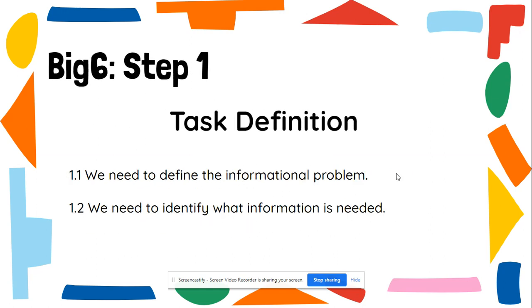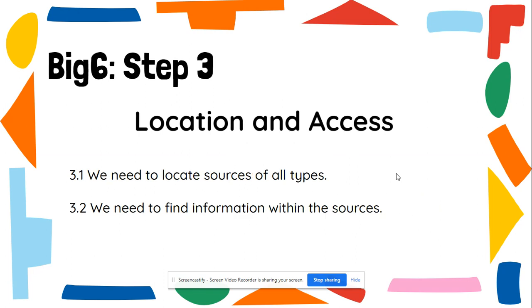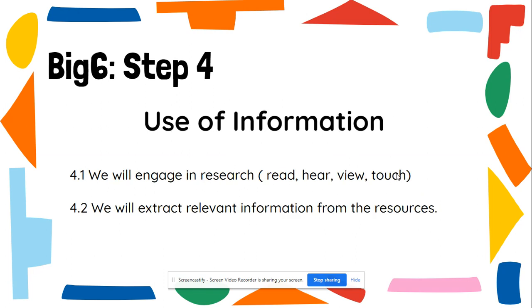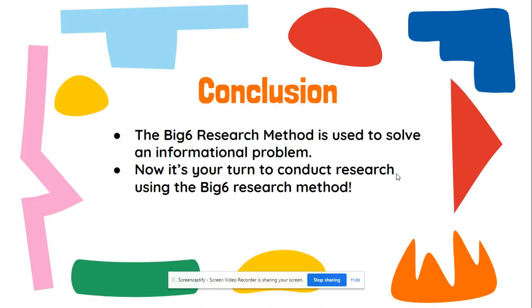So again, we have task definition, information seeking strategies, location and access, use of information, synthesis, and evaluation. To conclude, the Big Six research method is used to solve an informational problem. Now it's your turn to conduct research using the Big Six research method. You may now go to your handout. Enjoy!